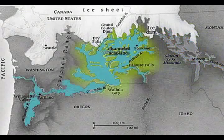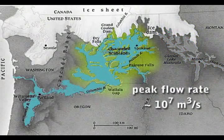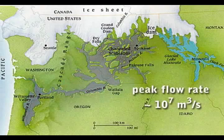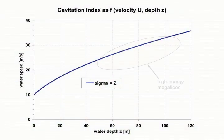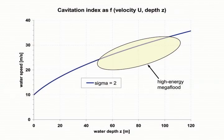When the ice dam failed, floodwater eroded what became known as the channeled scablands in Washington State. This high-energy mega-flood had flow speeds reaching 30 meters per second and depths up to 100 meters.